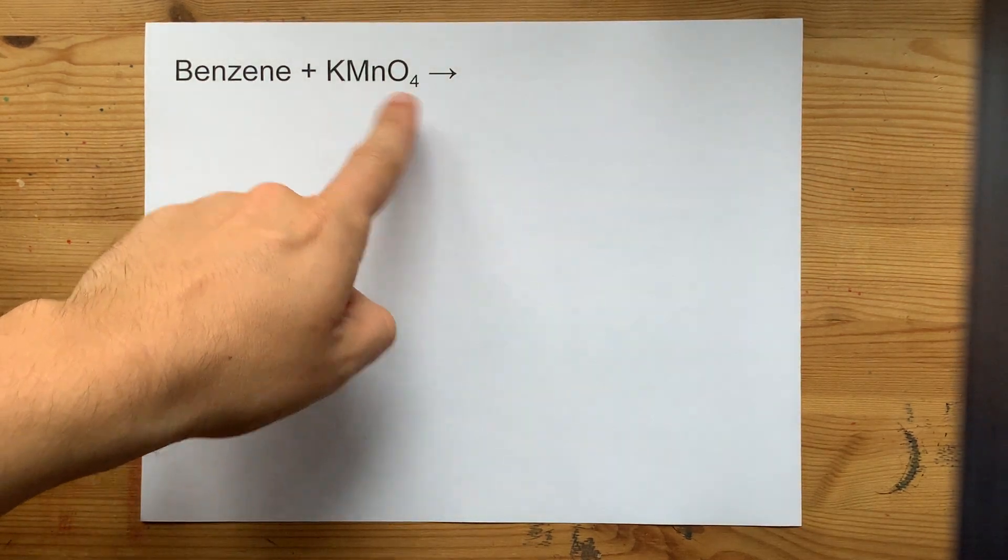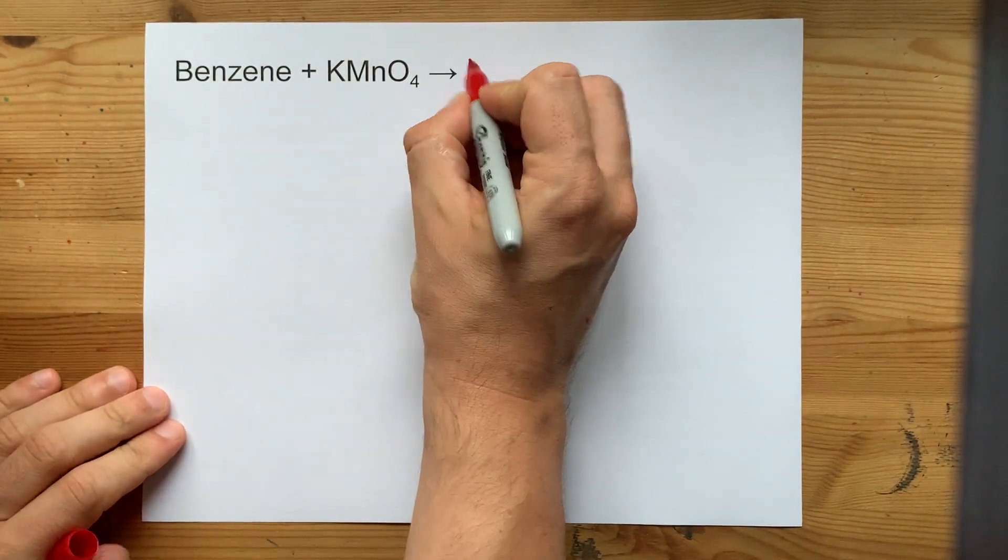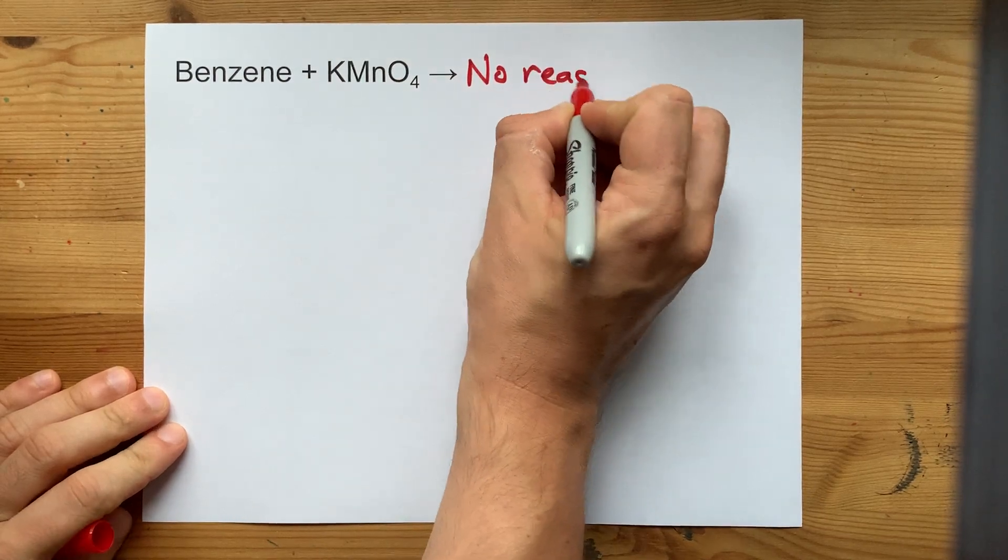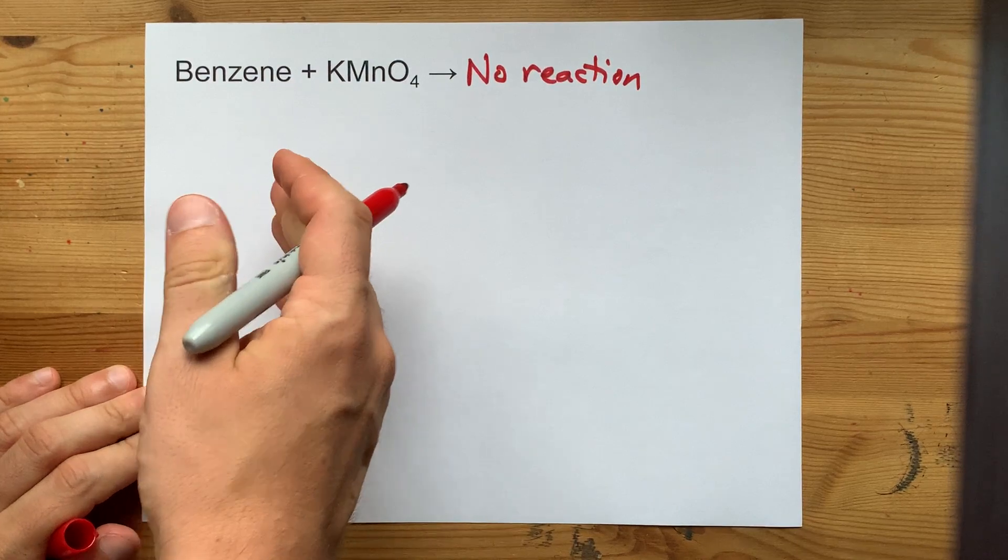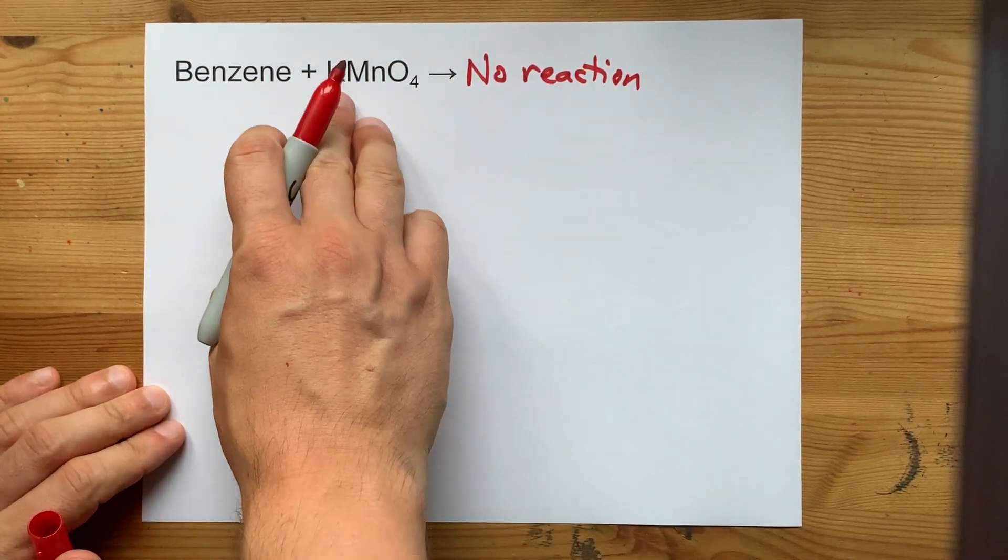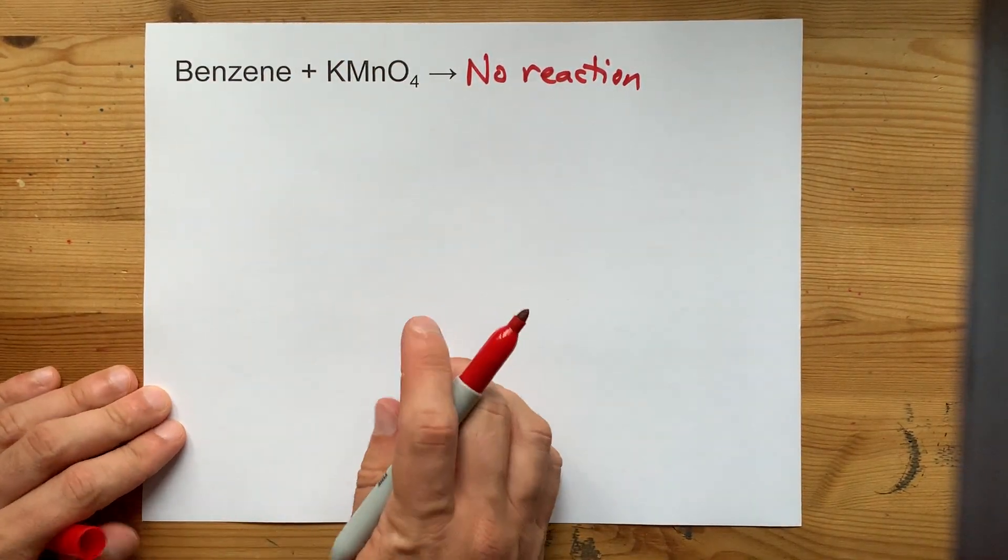Does benzene react with potassium permanganate? The answer is a big fat no, it does not. There's no portion of the benzene molecule that can be oxidized by this oxidizing agent.